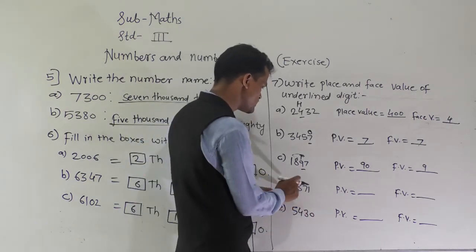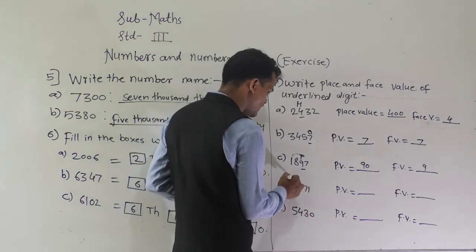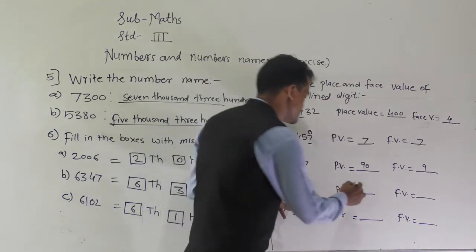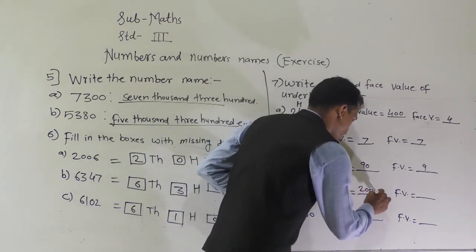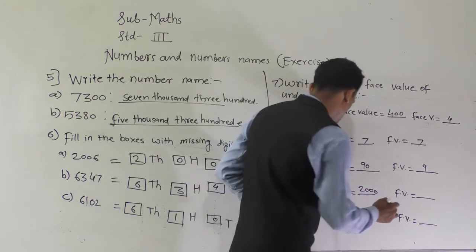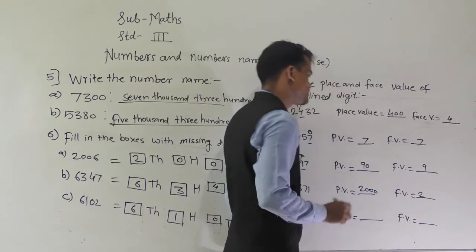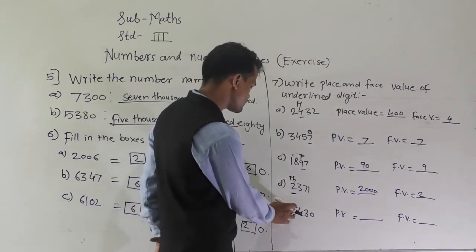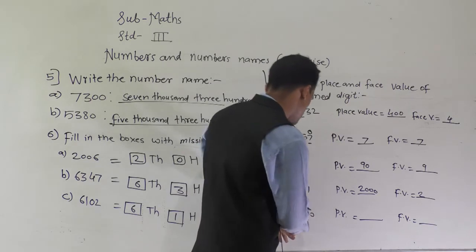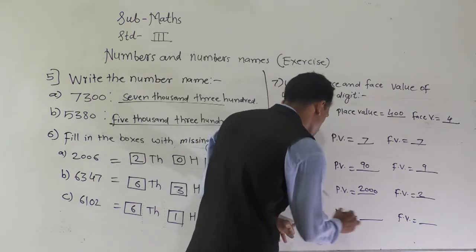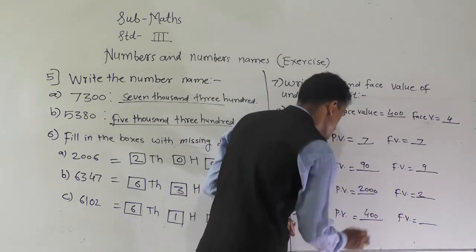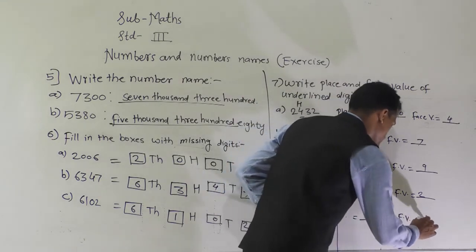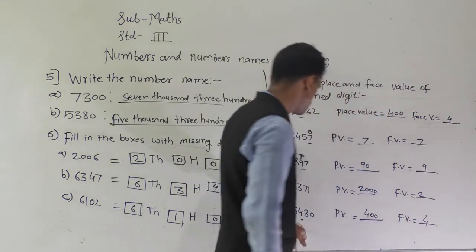Then 2371 — the underlined digit is 2. It comes at the thousand place, so the place value of 2 is 2000, and the face value does not change. Then the digit 4 — its place value is 400 because it comes at the hundred place, and the face value is 4.